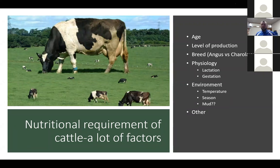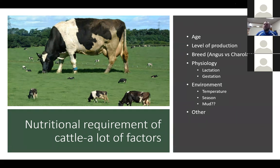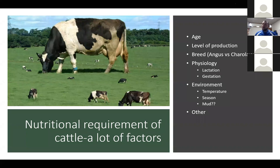Also think about the level of production. A lot of times we encourage cattle producers to use EPDs — highest growth, weaning weight, or yearling weight bulls — but the only way we can actually achieve those goals is to put the groceries to them: give them high quality hay. There might be breed differences; I'm an Angus guy, but traditionally Angus have been smaller than Charolais, so a Charolais might consume more, though Angus size has increased since the 1970s.